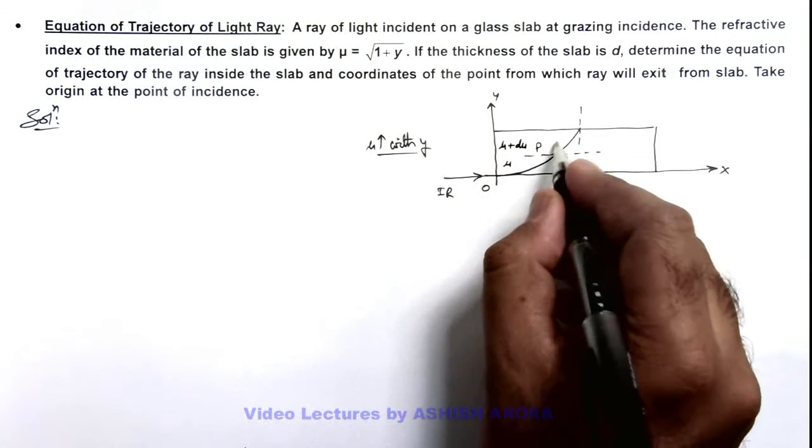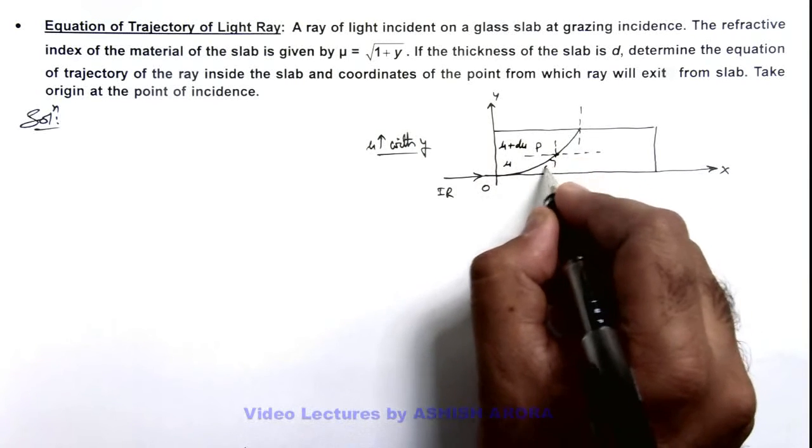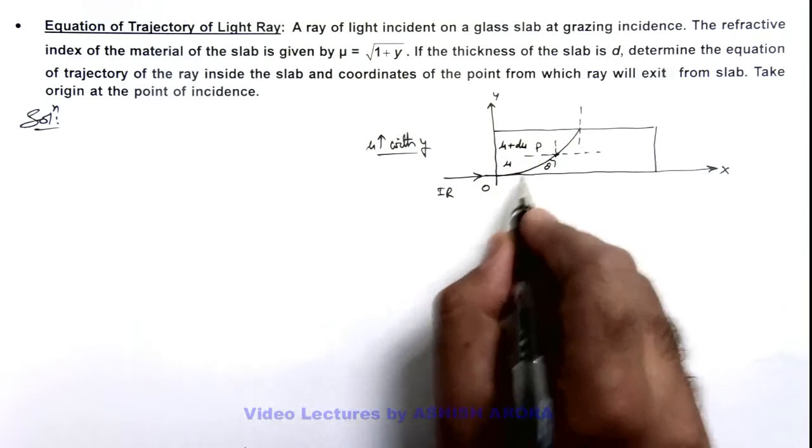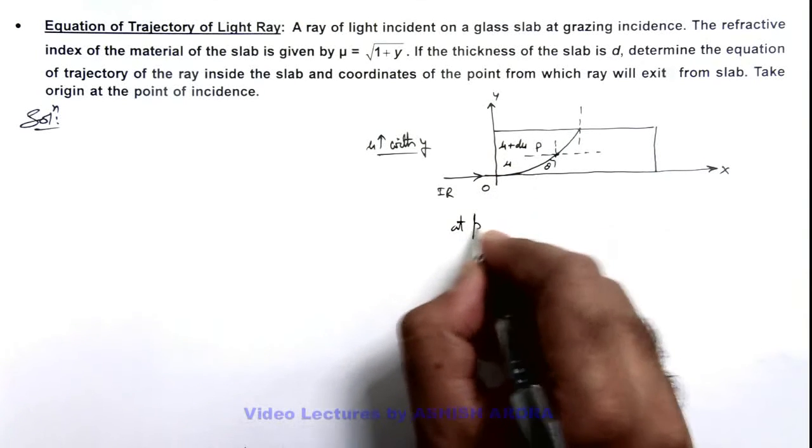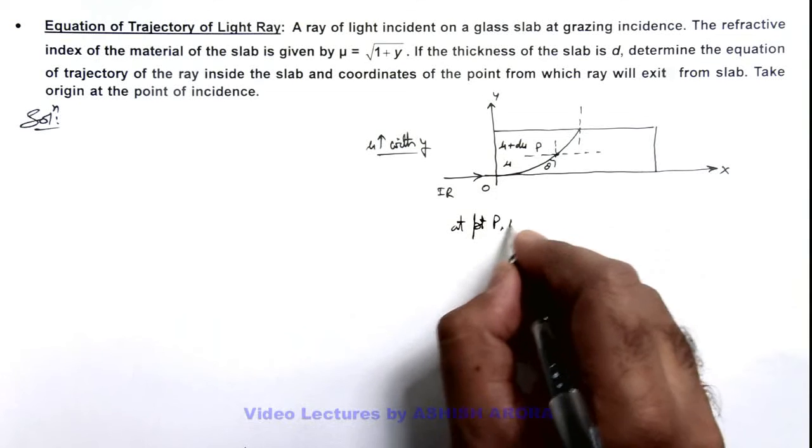So here we can say the angle of incidence is taken as θ, which is continuously decreasing with the gradual increase in value of μ. So here we can write at point P, we use Snell's law.